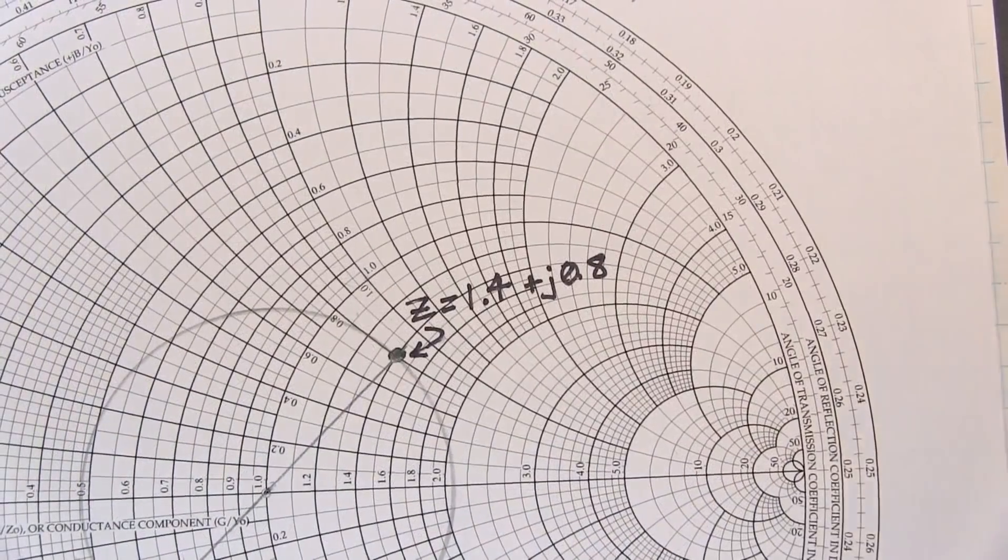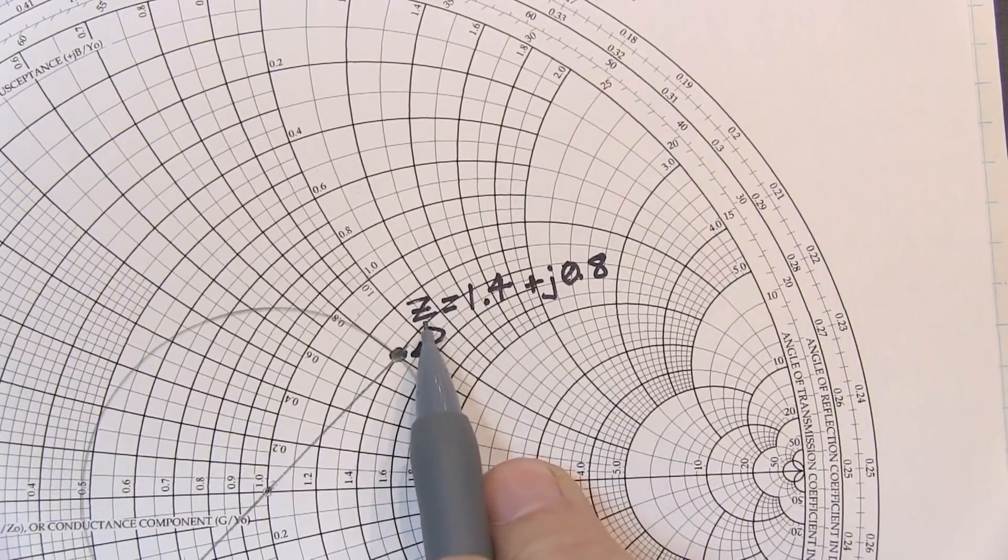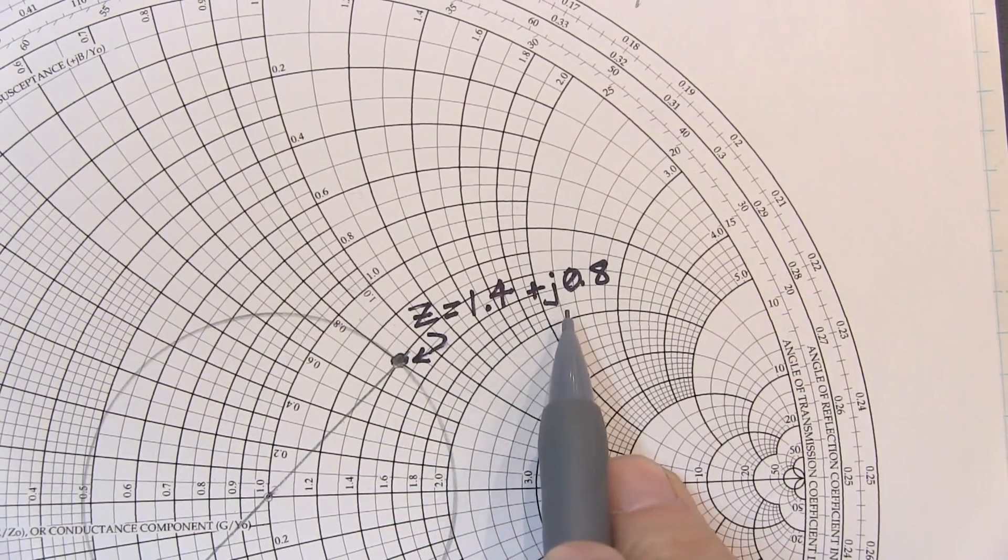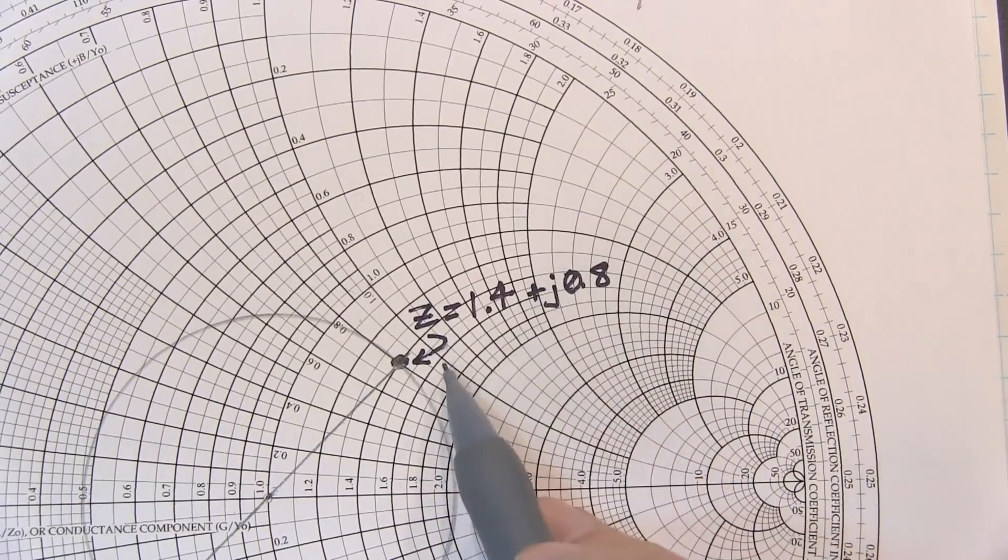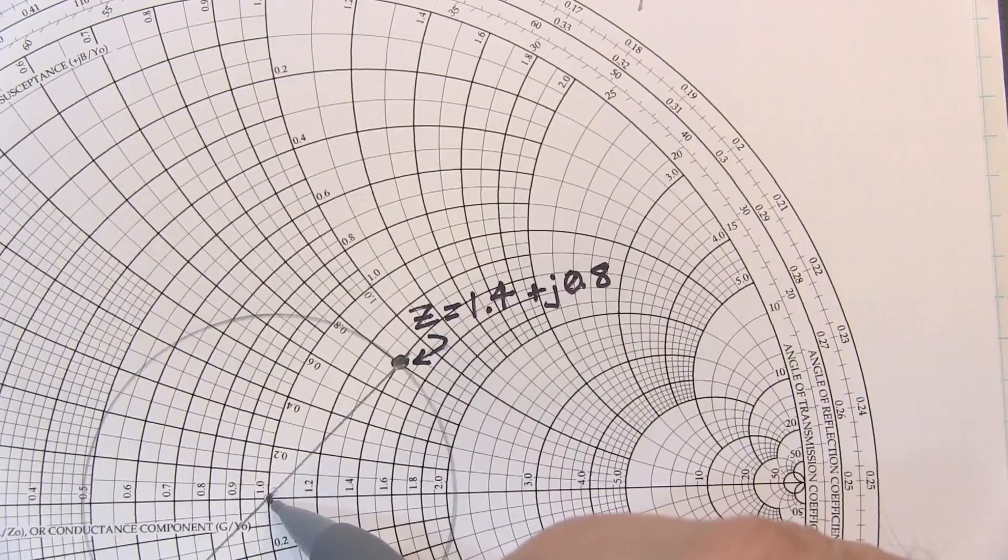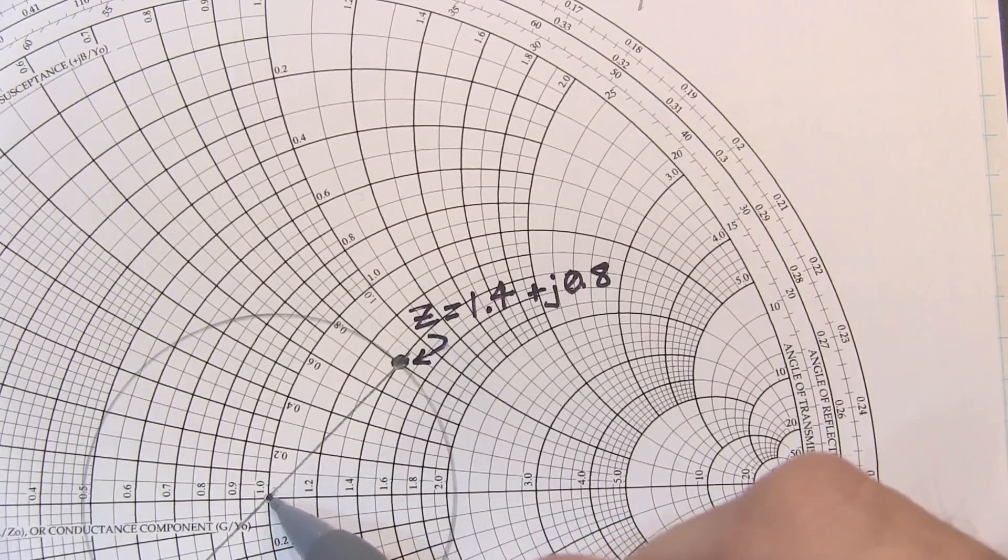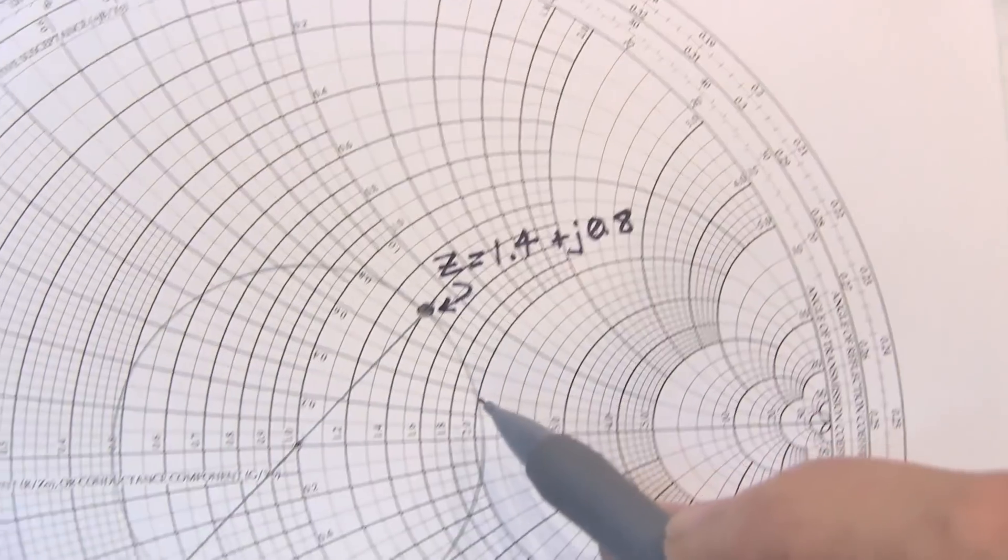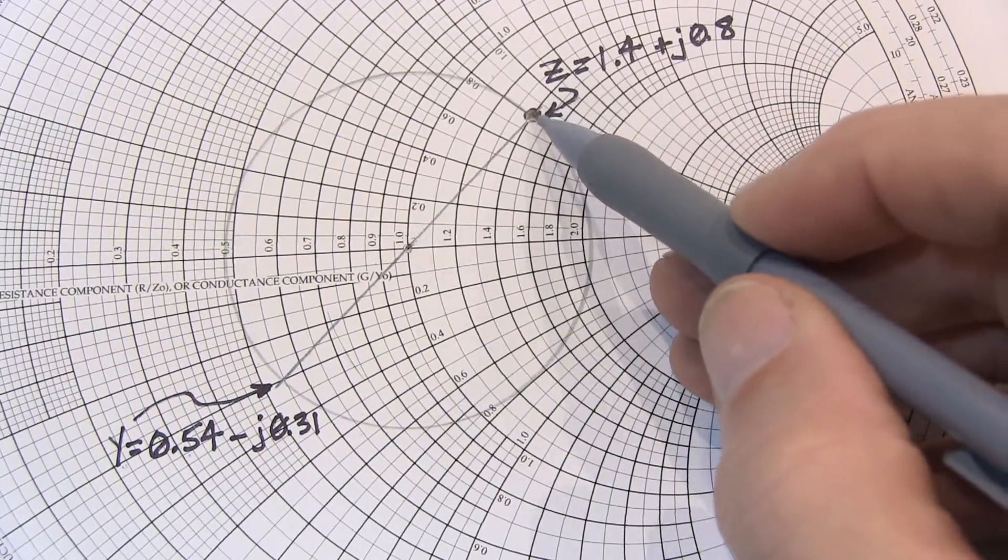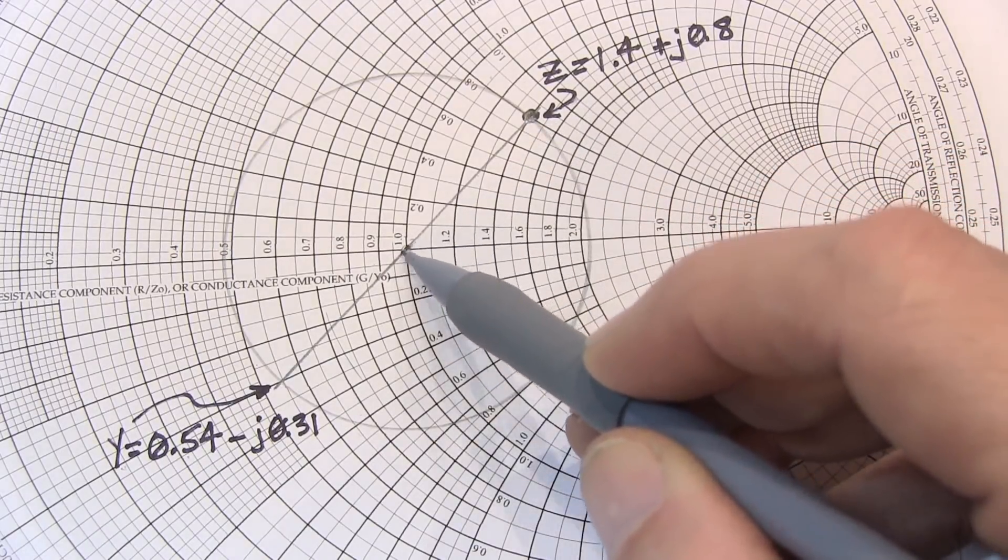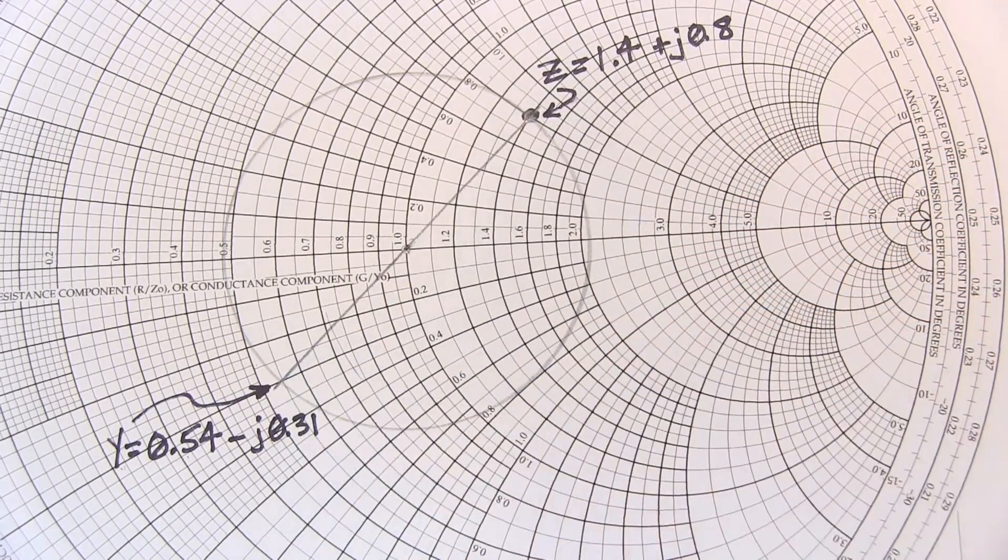Let's say the impedance that I have that I want to convert to admittance is normalized to 1.4 plus j0.8. To convert this to the admittance, we simply take a compass and we draw from the system impedance center through that point and all the way around the Smith chart. And then take a straight line from our impedance component through the center and cross the circle on the other side.